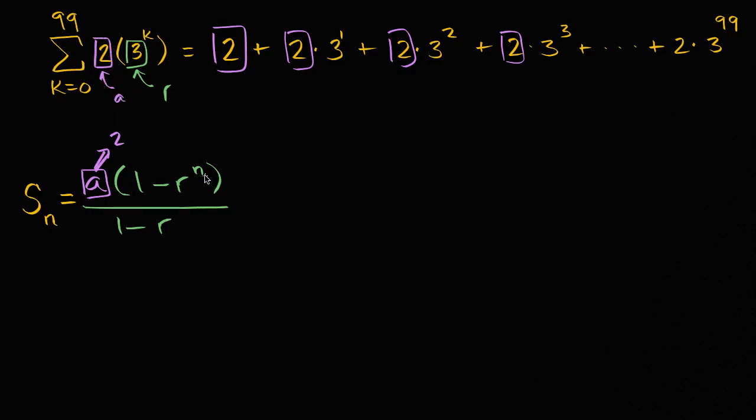And now what is n going to be? You might be tempted to say, if we're going up to k equals 99, maybe n is 99, but we have to realize that we're starting at k equals zero. So there is actually a hundred terms here. Notice, when k equals zero, that's our first term. When k equals one, that's our second term. When k equals two, that's our third term. When k equals three, that's our fourth term. When k equals 99, this is our hundredth term.